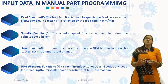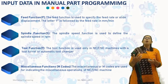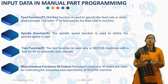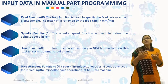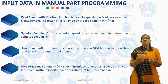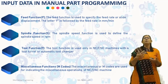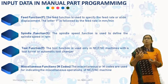Next is spindle functions, designated by S. The spindle function is used to define the spindle speed in RPM. For example, S1500 indicates that the spindle speed is 1500 RPM. The tool function is used only in NC/CNC machines with a tool turret or automatic tool changer. For example, T05 indicates that the tool in turret position 5 is in operation. The last is miscellaneous function, designated by M code. The miscellaneous or M codes are used for indicating miscellaneous operations of NC/CNC machines, like coolant on/off, spindle on/off, and for stopping the program.